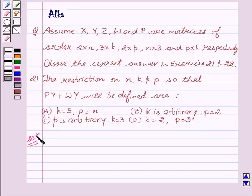As you all know, the product of matrices is defined only if the number of columns of the first matrix is equal to the number of rows of the second matrix. So now let's start.